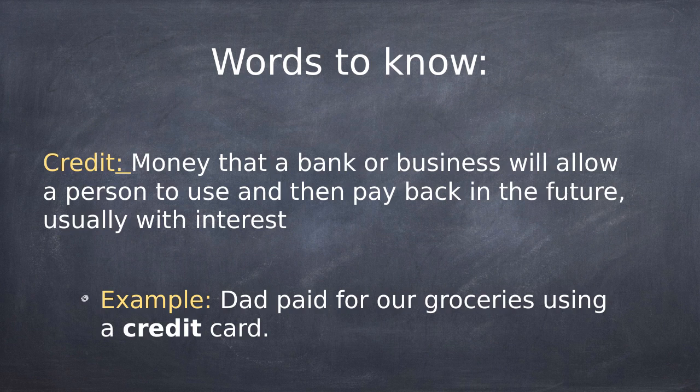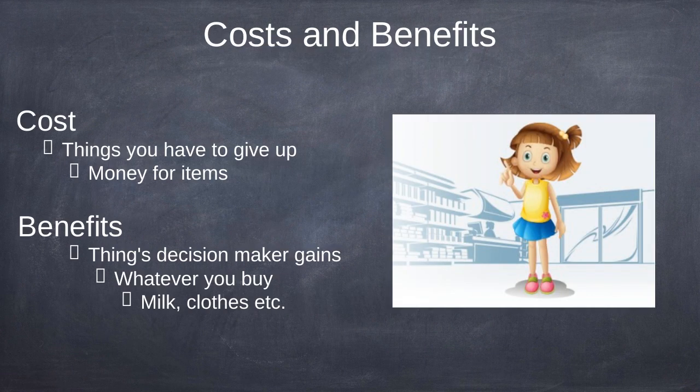Credit is money that a bank or business will allow a person to use and then pay back in the future, usually with interest — like a credit card or a loan. Now, cost and benefits: the cost is things you have to give up, basically money for items. Usually when people think of cost they just think money, but it could be other stuff — we'll focus on money for right now.